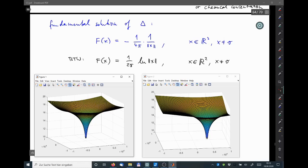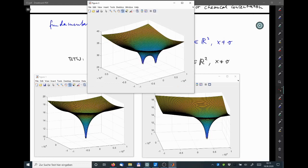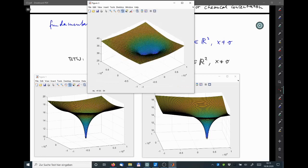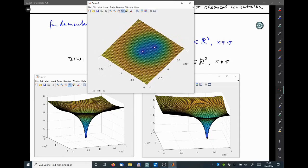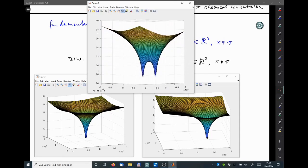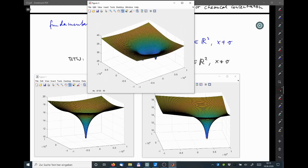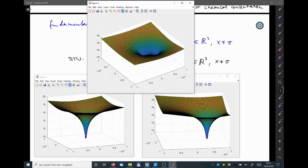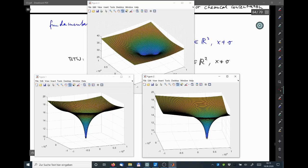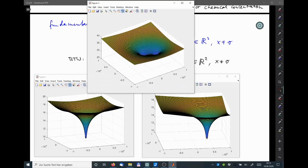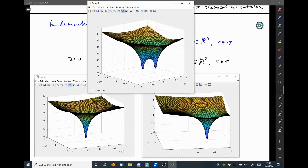So the sum of these two solutions here is the following. So here you see a singularity at the origin and another singularity where this one was. Of course it looks a bit different, but it still solves Laplace's equation because it's the sum of two functions that solve Laplace's equation and because the Laplace operator is linear.